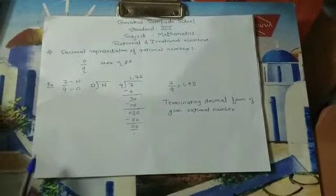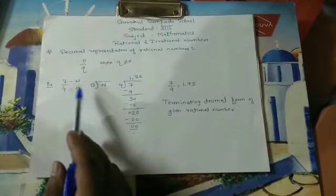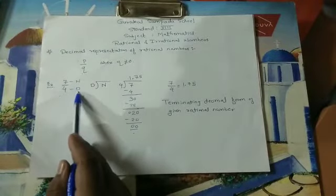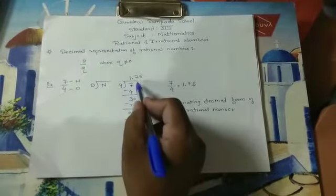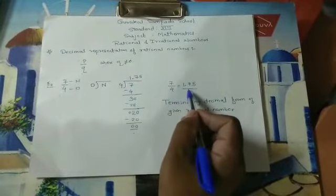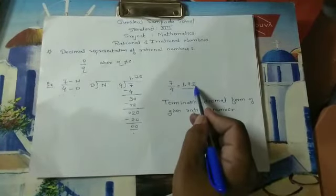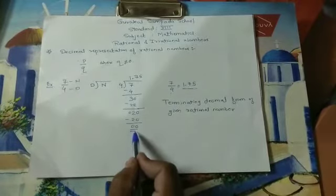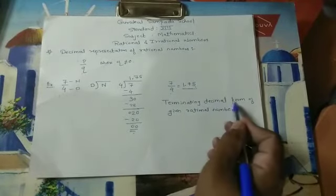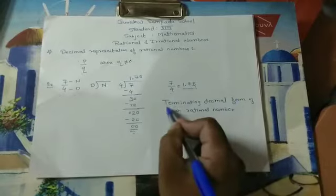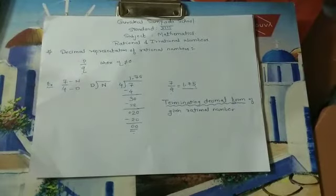To repeat: for the rational number 7 by 4, where 7 is the numerator and 4 is the denominator, we divide 7 by 4 and get 1.75. Since the remainder is 0, the process of division ends, and this is called the terminating decimal form of a given rational number.